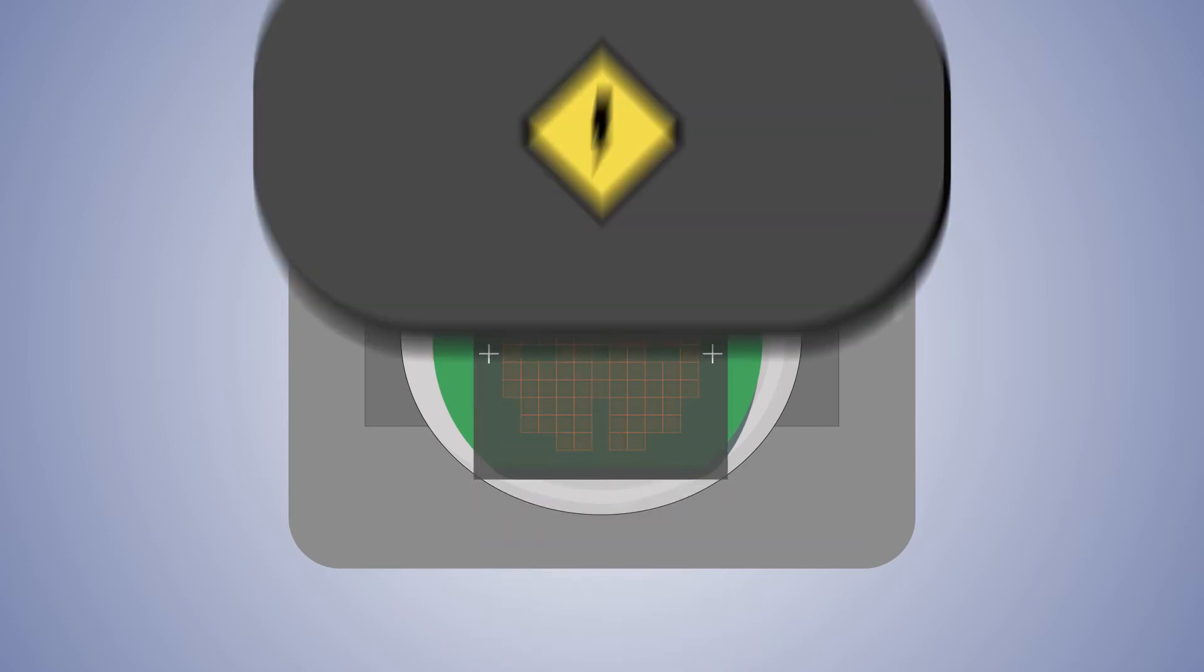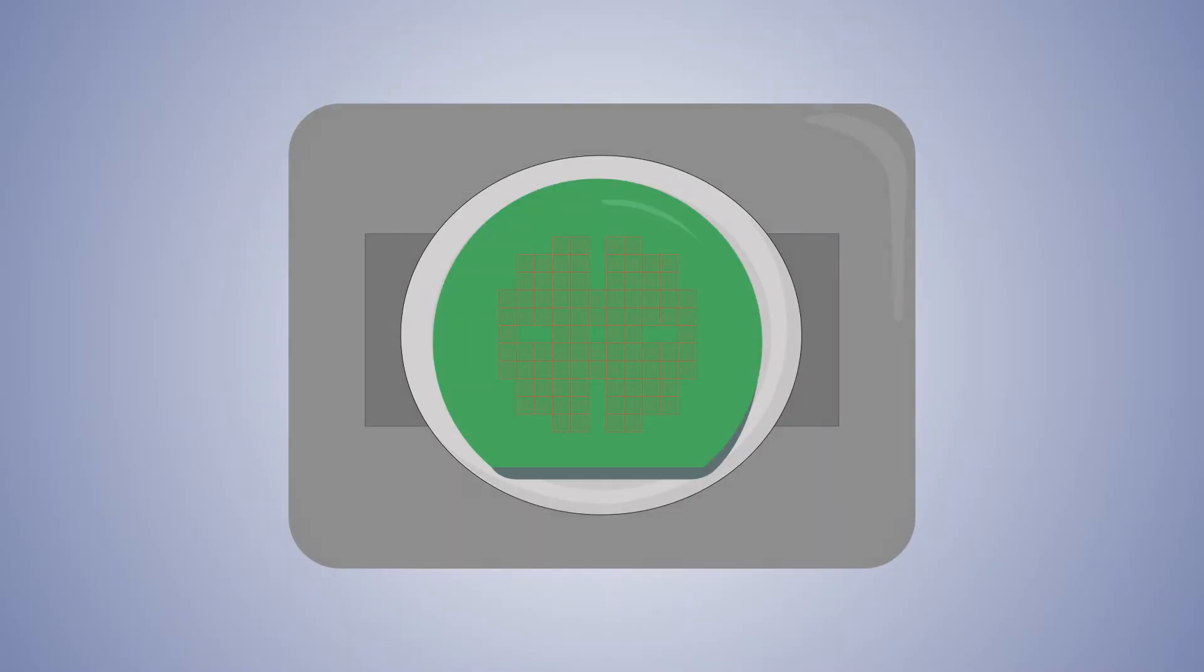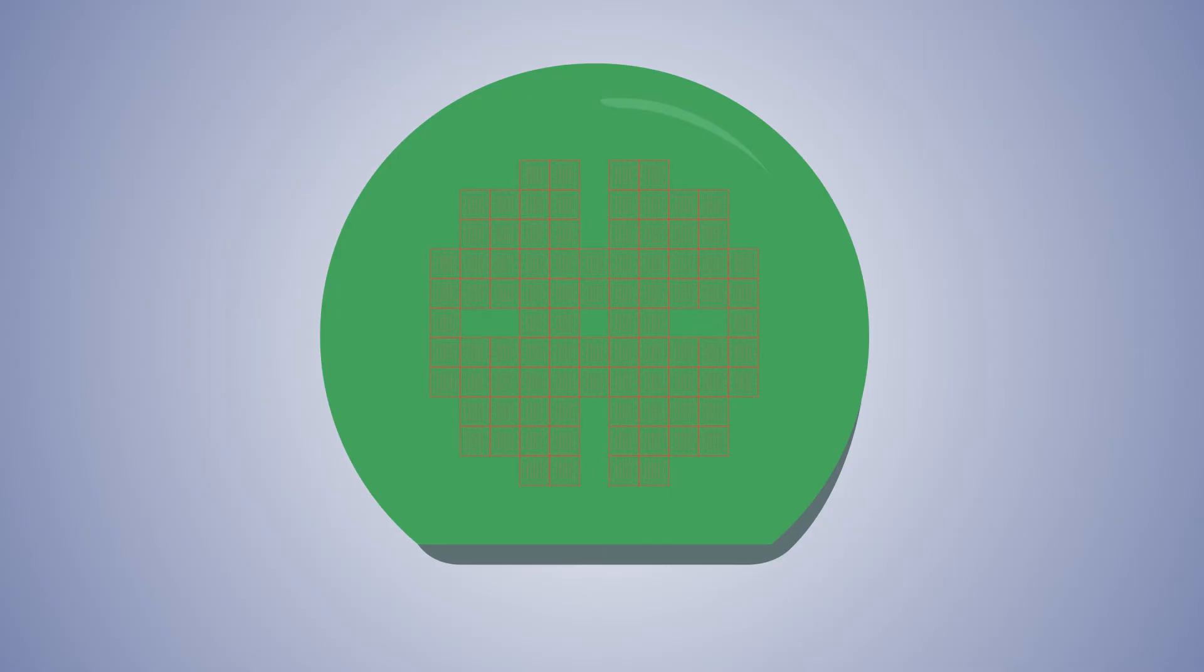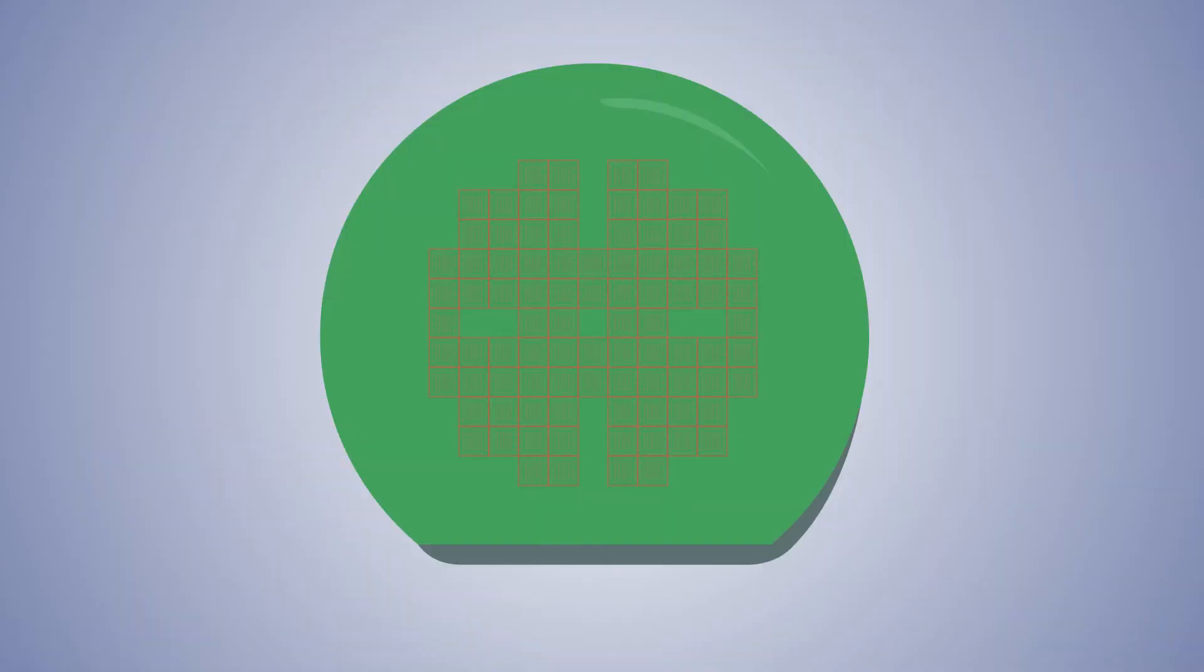We will utilize a machine resembling a camera with a flash, known as a mask aligner, to work with the mask. This crucial part of the process aids in exposing the desired image onto the wafer. Don't forget your protective glasses, because the flash is ultraviolet light and it can damage our eyes.